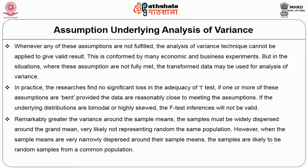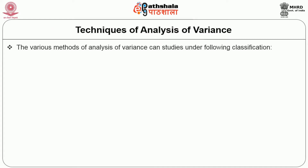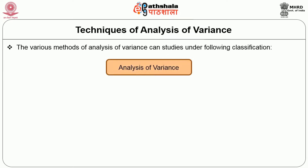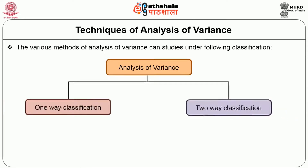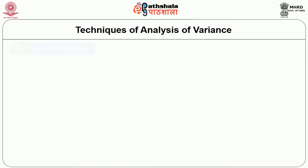However, when the sample means are very narrowly dispersed around the grand mean, the samples are likely to be random samples from a common population. The various methods of analysis of variance can be studied under the following classification: one-way classification or two-way classification, and it can be studied by using the direct method, shortcut method, and coding method.